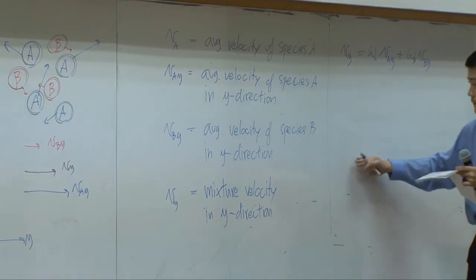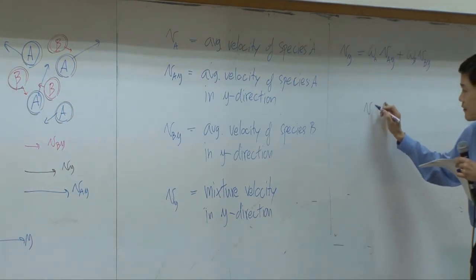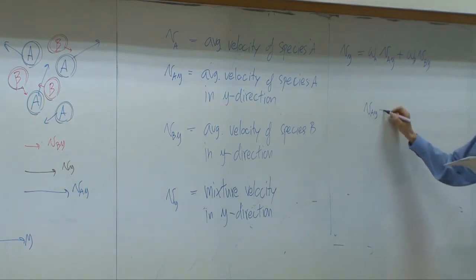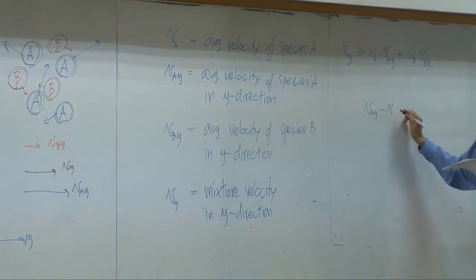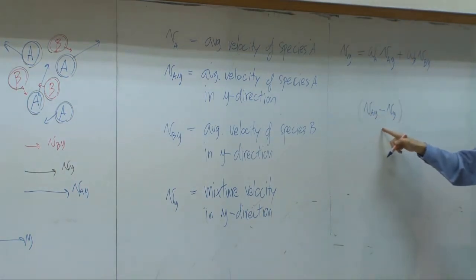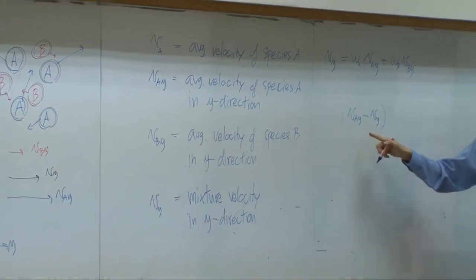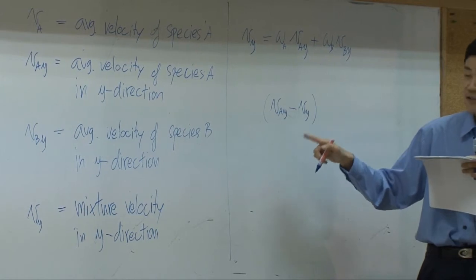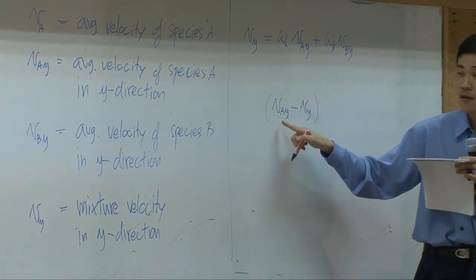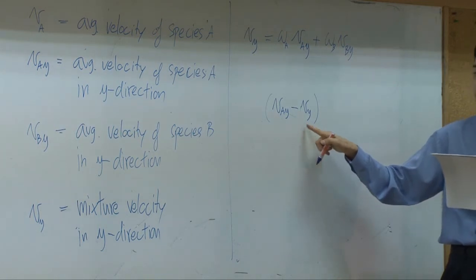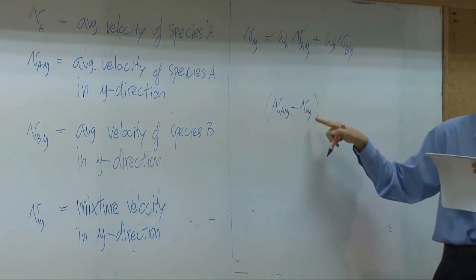Now, if I take VAY and subtract it by VY, what does it mean? This term here represents how fast species A moves compared to the average velocity of the mixture.